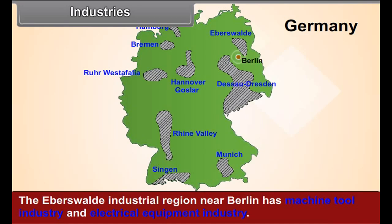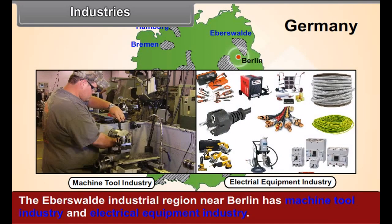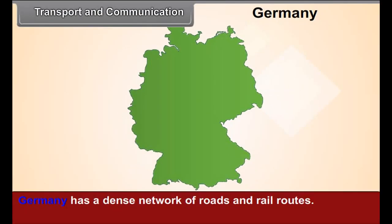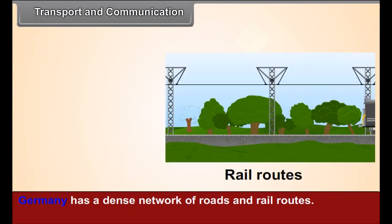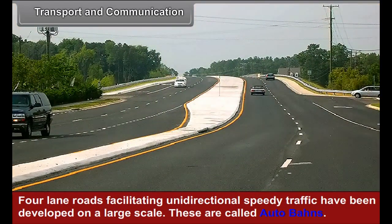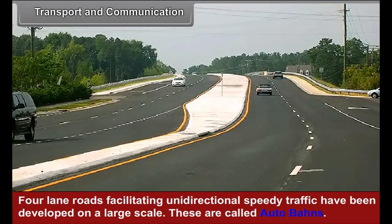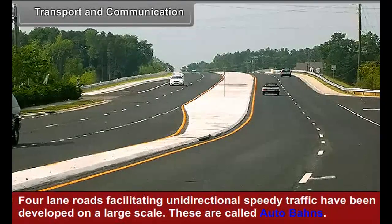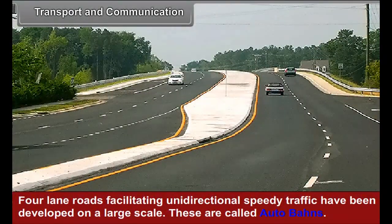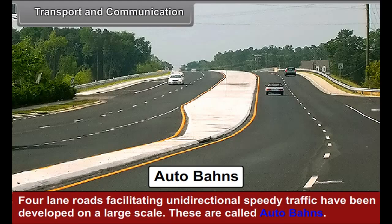The Hamburg and Bremen industrial regions are famous for the shipbuilding industry. The Eberswalde industrial region near Berlin has machine tool and electrical equipment industries. Germany has a dense network of roads and rail routes. Four-lane roads facilitating bidirectional speedy traffic have been developed on a large scale — these are called autobahns.